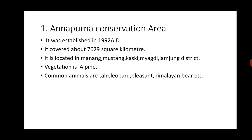Number one: Annapurna Conservation Area. It was established in 1992 AD. It covers about 7,629 square kilometers. It is located in Manang, Mustang, Kaski, Bagdi, and Lamjung districts. Vegetation is alpine. Common animals are thar, leopard, and Himalayan bear.